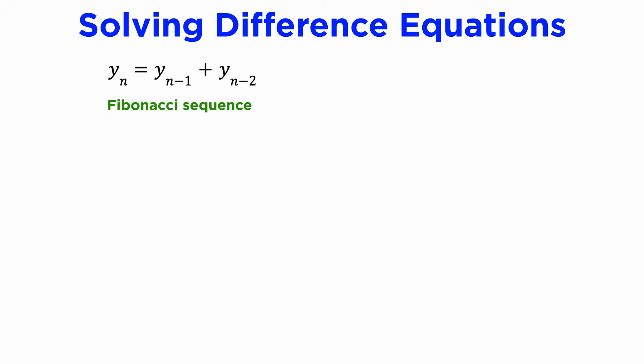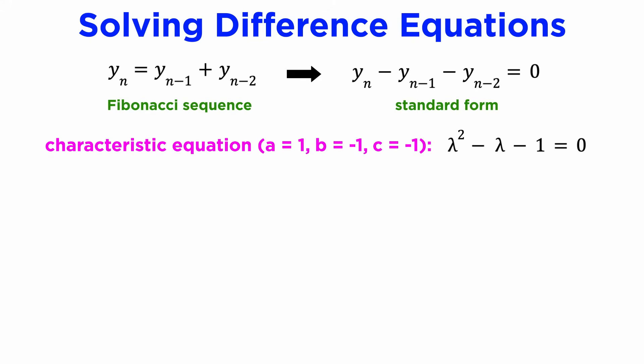Let's use this method to solve our example. We have yn equals yn minus 1 plus yn minus 2, but we need to get it into standard form. So let's move everything to one side to get yn minus yn minus 1 minus yn minus 2 equals 0. We can write down our quadratic characteristic equation and solve it to get two roots, 1 plus or minus the square root of 5 over 2, which happens to be the golden ratio phi and its reciprocal.